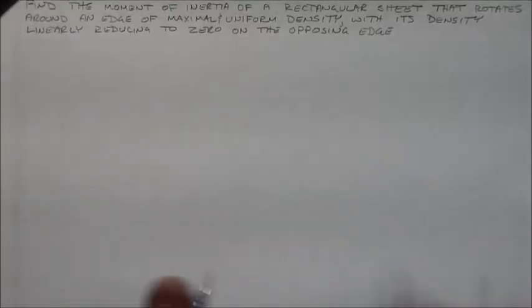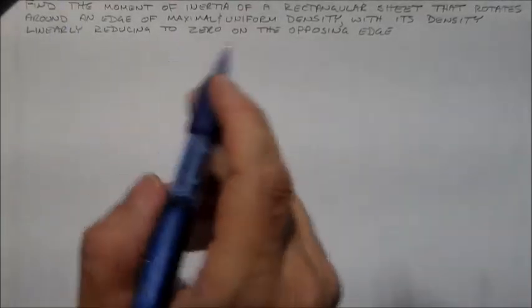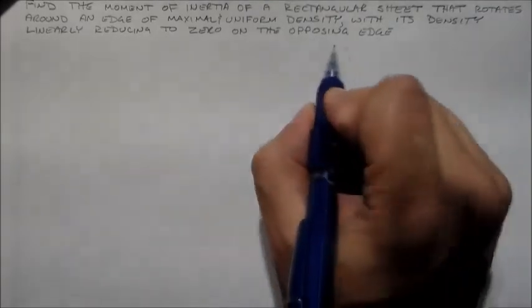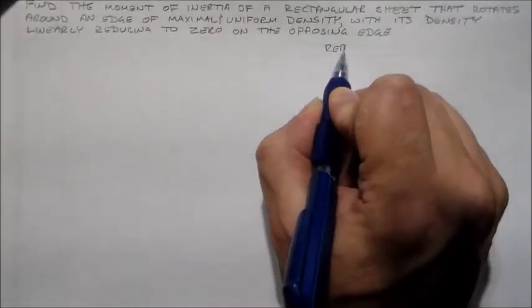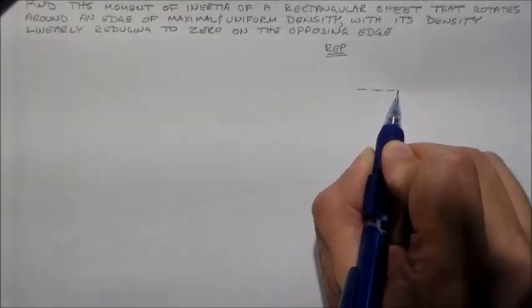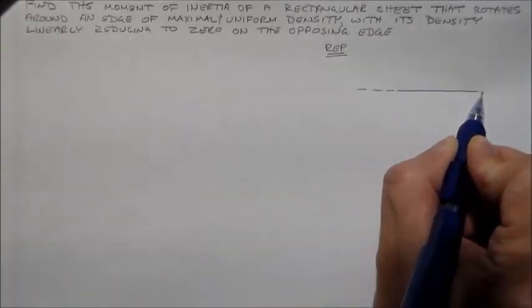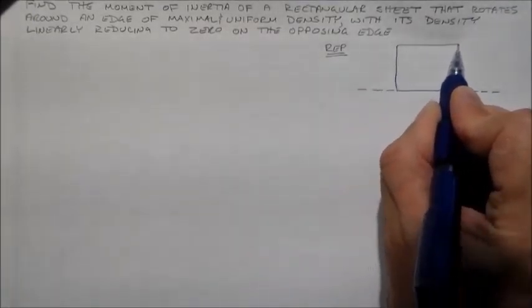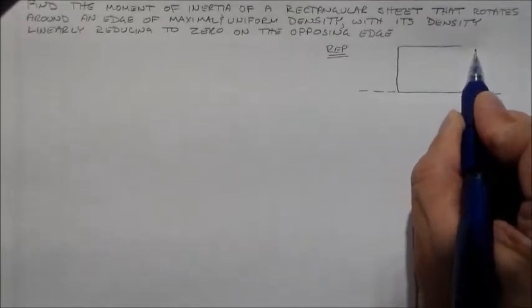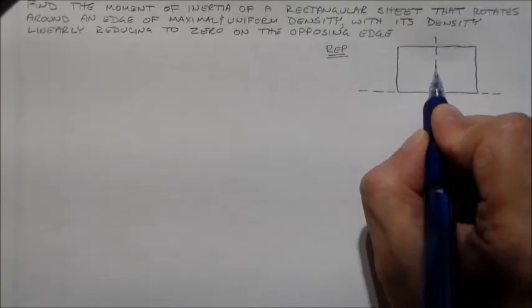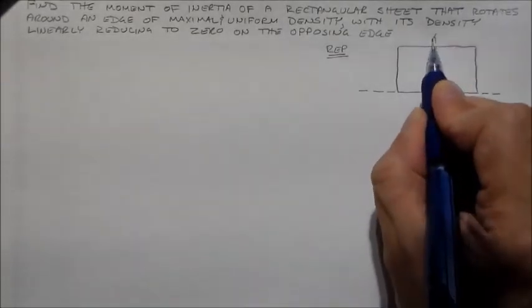Alright, so I'd like to take a look at this guy here real quick. I'd like to find the moment of inertia of a rectangular sheet, and it's going to rotate around a line that has a maximal density and that density is going to reduce. So I can't really draw that reduction in the density very well. I have ways of trying to do it but they don't really look all that great. Shading and stuff takes a long time and doing this isn't the most amazing thing.